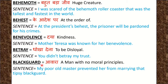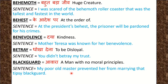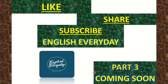Next word is Blackguard. Blackguard means आवारा — a man with no moral principles. Sentence: My poor old master prevented her from marrying that tipsy blackguard. अब tipsy means पियक्कड़. मेरे गरीब बूढ़े मालिक ने उसे उस पियक्कड़ आवारा से शादी करने से बचा लिया.